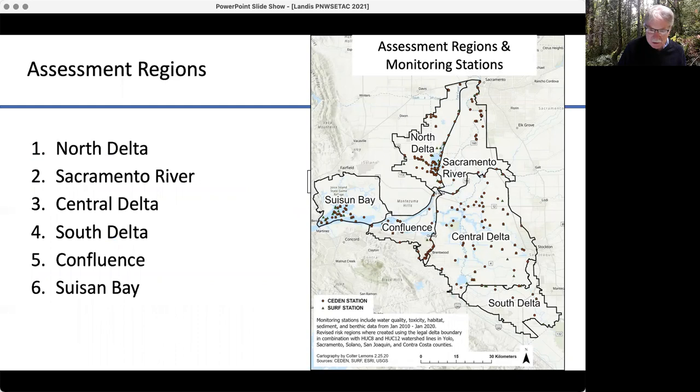We have assessment regions. The ones this time we call them the North Delta, the Sacramento River, the Central Delta, South Delta, the confluence when the two major rivers come together, and the Suisun Bay, which eventually flows out to the San Francisco Bay.